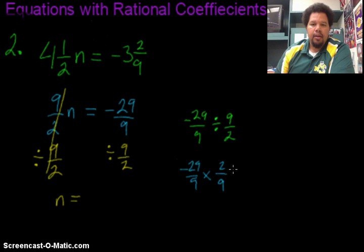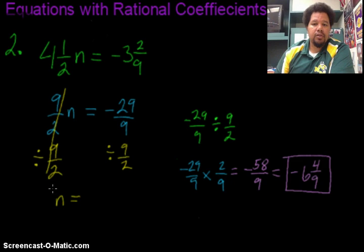And there's nothing to cancel out from the top and the bottom. So I just multiply straight across, giving me a negative 58 over 9, which I can change into an improper fraction as negative 6 and 4 ninths.